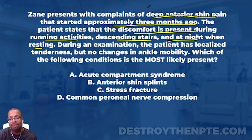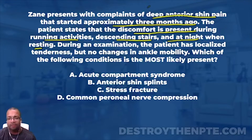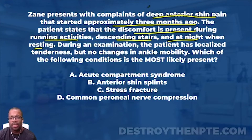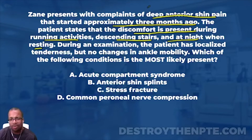During an examination the patient has localized tenderness but no changes in ankle mobility. That sentence tells me a lot - not every pathology presents with localized tenderness. It also says no changes in ankle mobility, so there must not be anything wrong with the capsule. Even from a muscle standpoint, if the muscle was a problem and it was tight, that would limit ankle mobility - and I'm not seeing that.